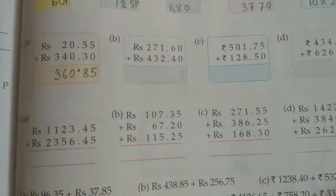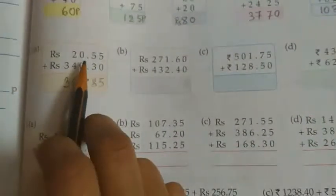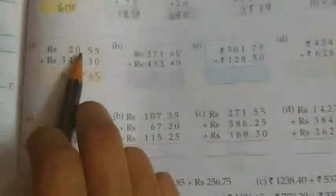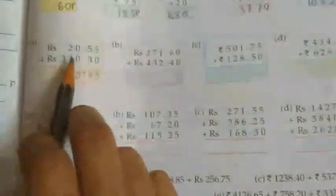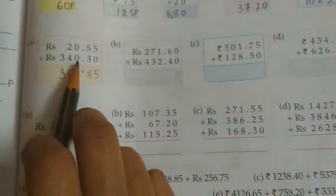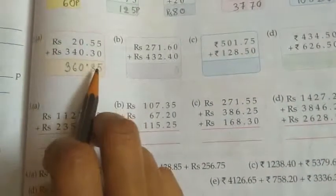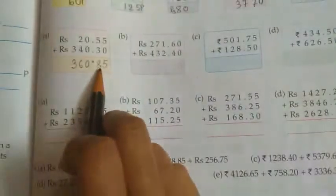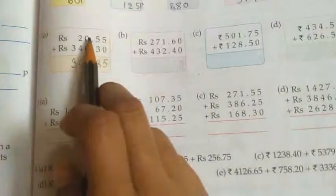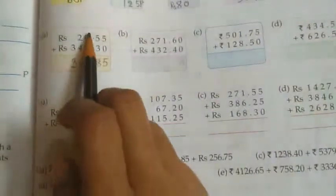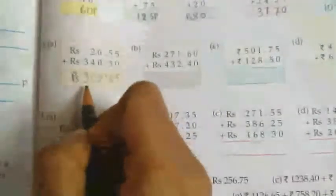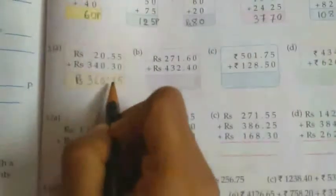Now 20 rupees 55 paise and 340 rupees 30 paise, we have to add them together. So 5 plus 0 equals 5, 5 plus 3 equals 8, giving 85 paise. Now come to rupees section: 0 plus 0 equals 0, 4 plus 2 equals 6, and 3. So rupees 360 rupees 85 paise.